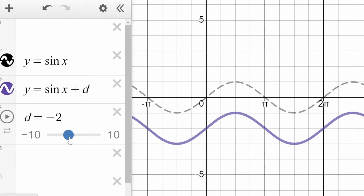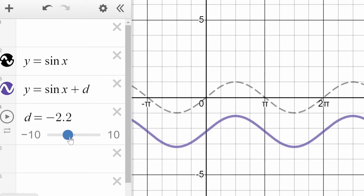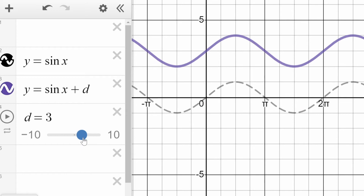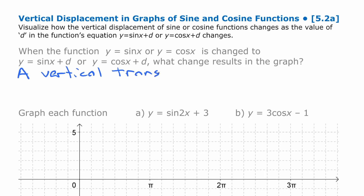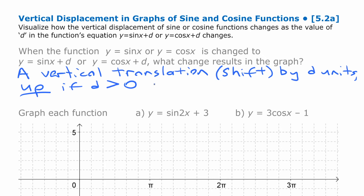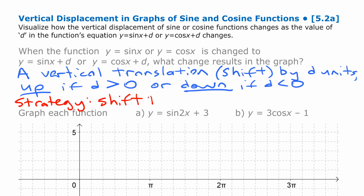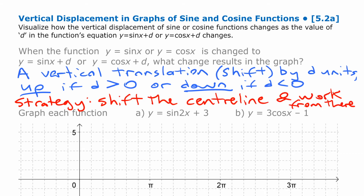Vertical displacement is what happens when sine x or cos x is changed to sine x plus d or cos x plus d. On the graph, that is a vertical translation or shift by d units — up if d is greater than zero, or down if d is less than zero. A good strategy when creating graphs by hand is to shift the center line up or down first, and then work from there.